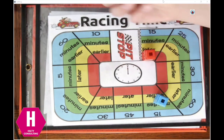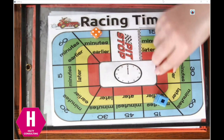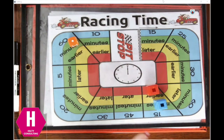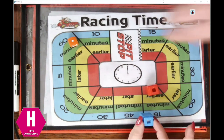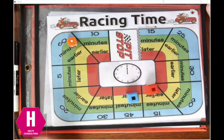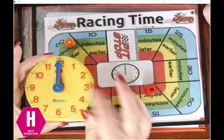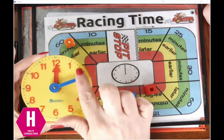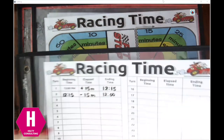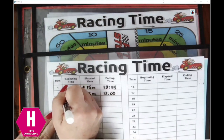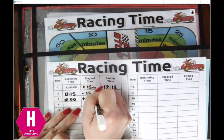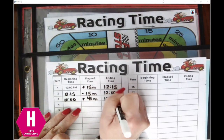Brett's going to roll. He is going to do the same thing to his clock, so he's going to end up at 12 o'clock. On my turn, I have 45 minutes later, so if I'm at 12 o'clock I have to add 45 minutes — that's going to get me to 12:45. My beginning time was 12 o'clock, I had to add 45 minutes, and my ending time is 12:45.